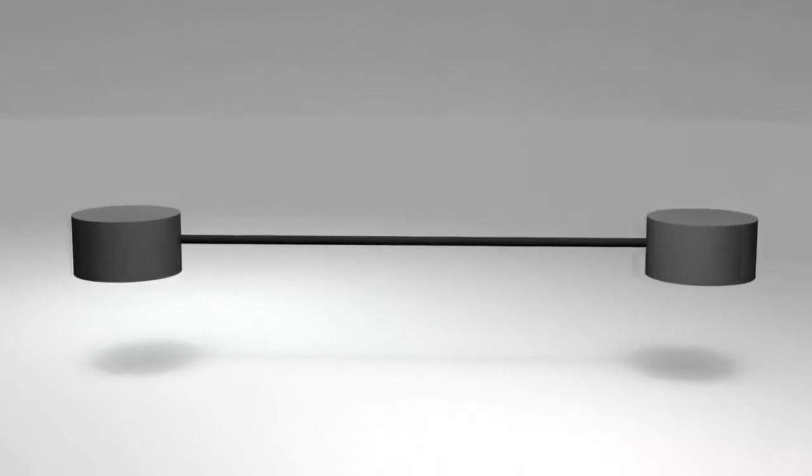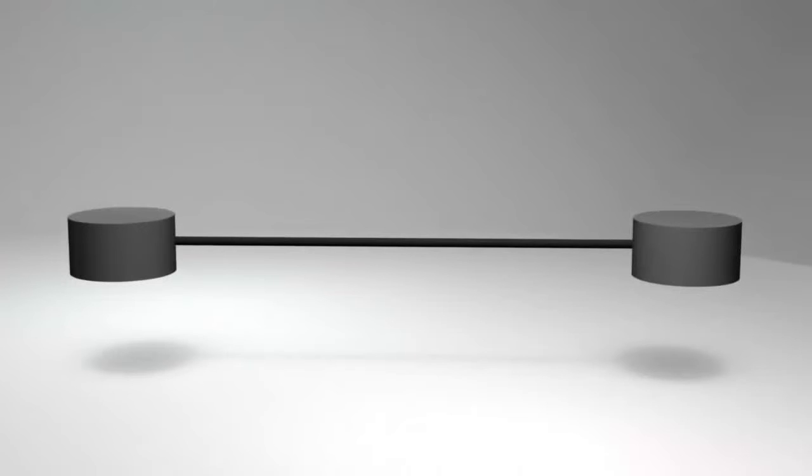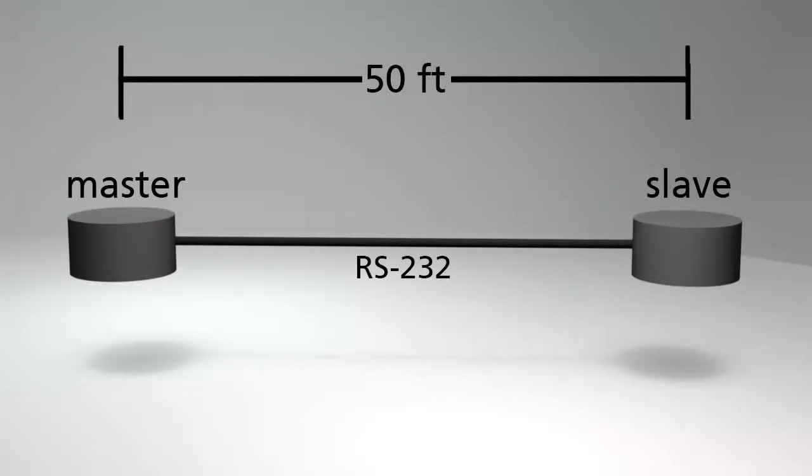RS-232 is a simple point-to-point arrangement. If you only need to connect one device to another and the distance between the two devices is less than 50 feet or 15 meters, then RS-232 will do the job.